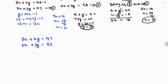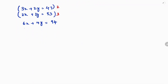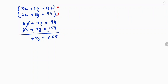To make the coefficients of x equal, multiply the first equation by 2 to get 6x plus 4y equals 94, and multiply the second by 3 to get 6x plus 9y equals 159. Subtracting: 4 minus 9 is minus 5y, and 94 minus 159 is minus 65. So y equals 65 by 5, giving y equals 13.